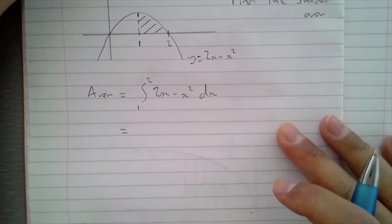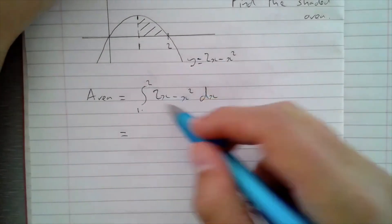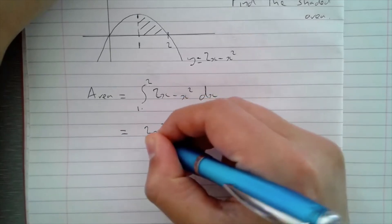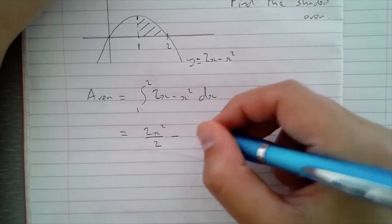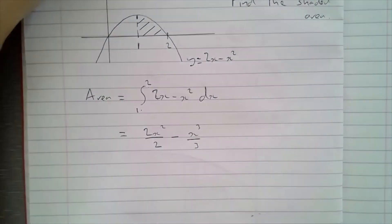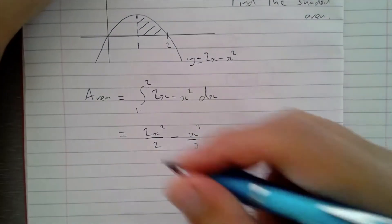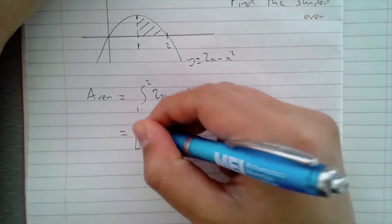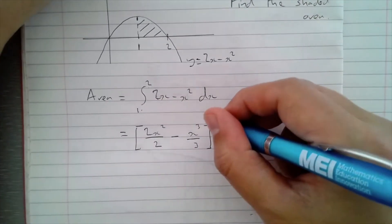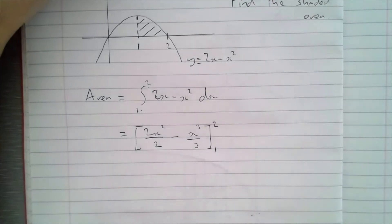So what I do is I integrate this as I would normally. That gives me 2x squared divided by the new power, take away x cubed divided by the new power. Instead of putting a plus C on the end, I put this thing in square brackets, then put the limits of integration on the outside.